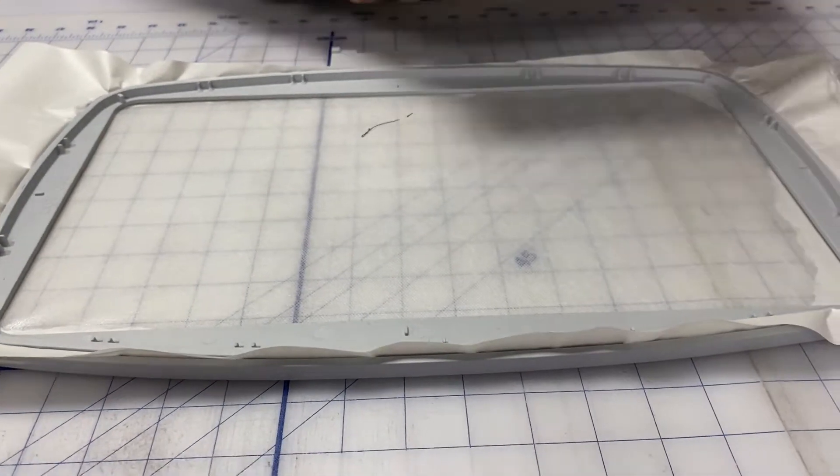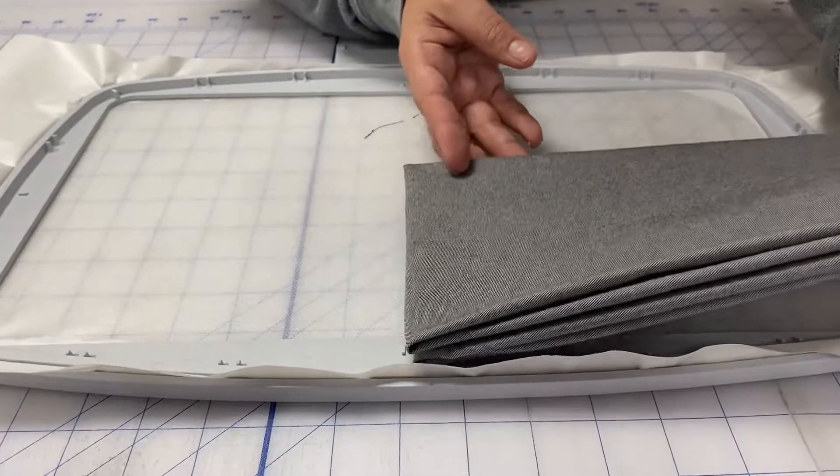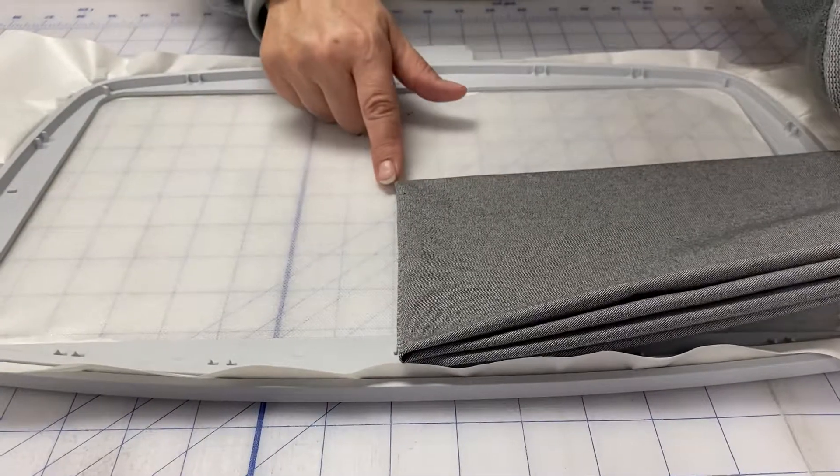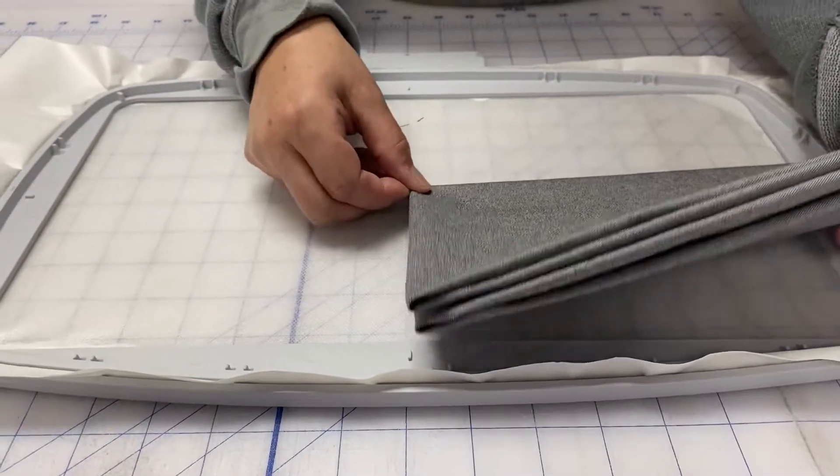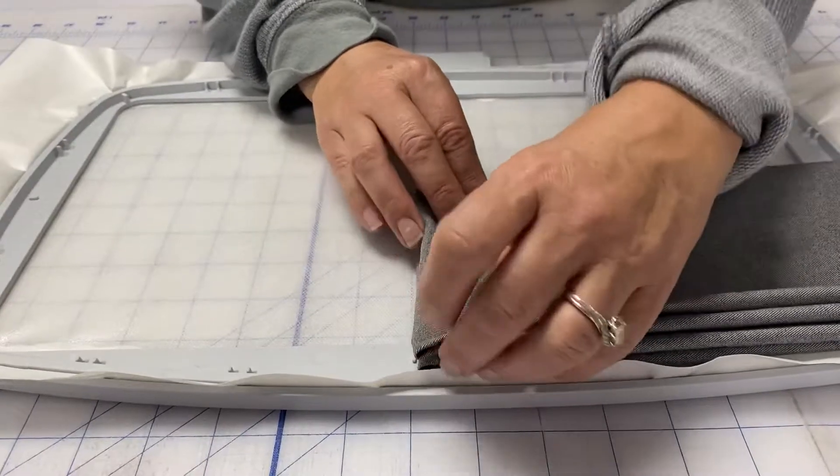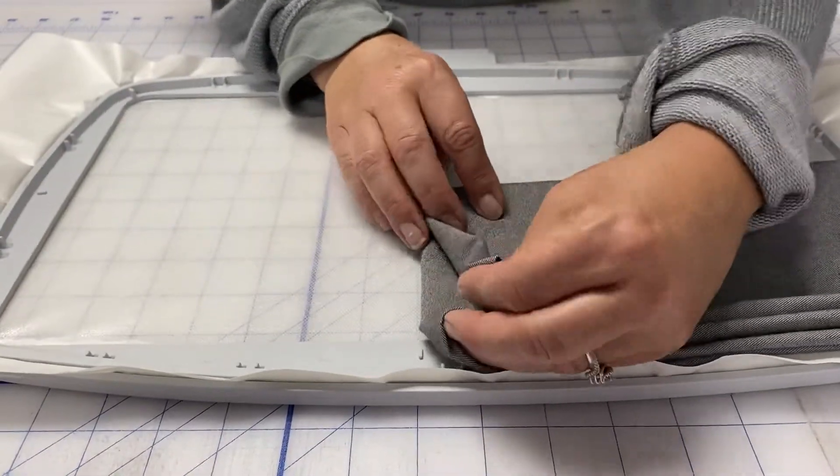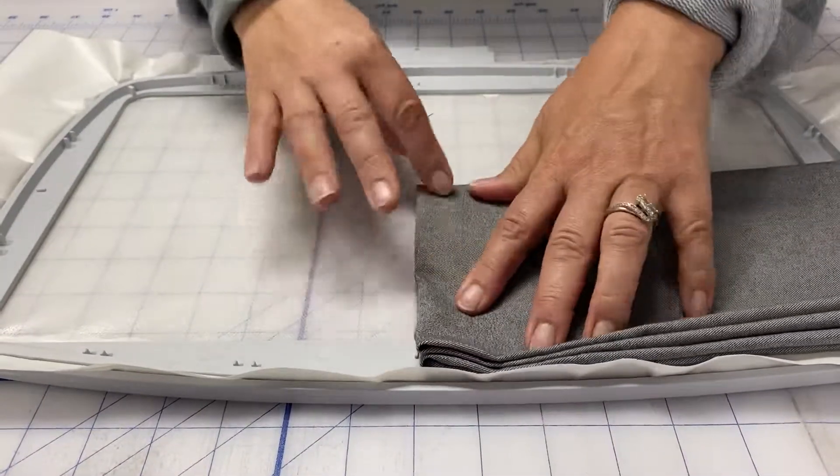So I'm going to take my project that I've folded and I'm going to place that center of my point where these intersect. And I can use the lines on my cutting table to line those up.